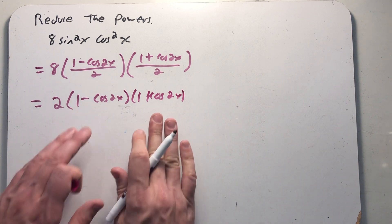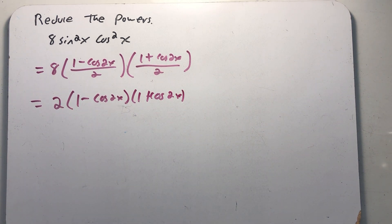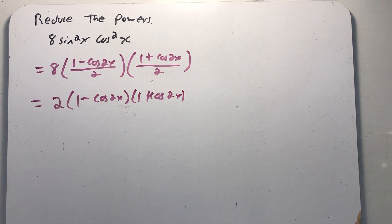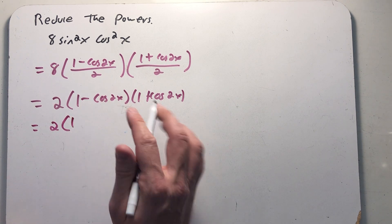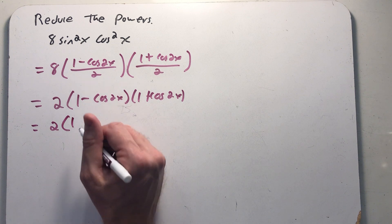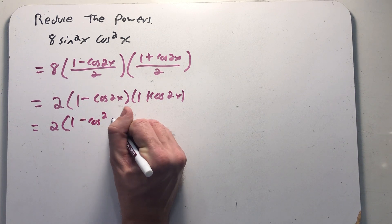I still have things being multiplied together, and if I think about how those multiply together, I definitely still have a cosine squared in here. I have 2 times 1, those inside terms cancel, minus cosine squared 2x.